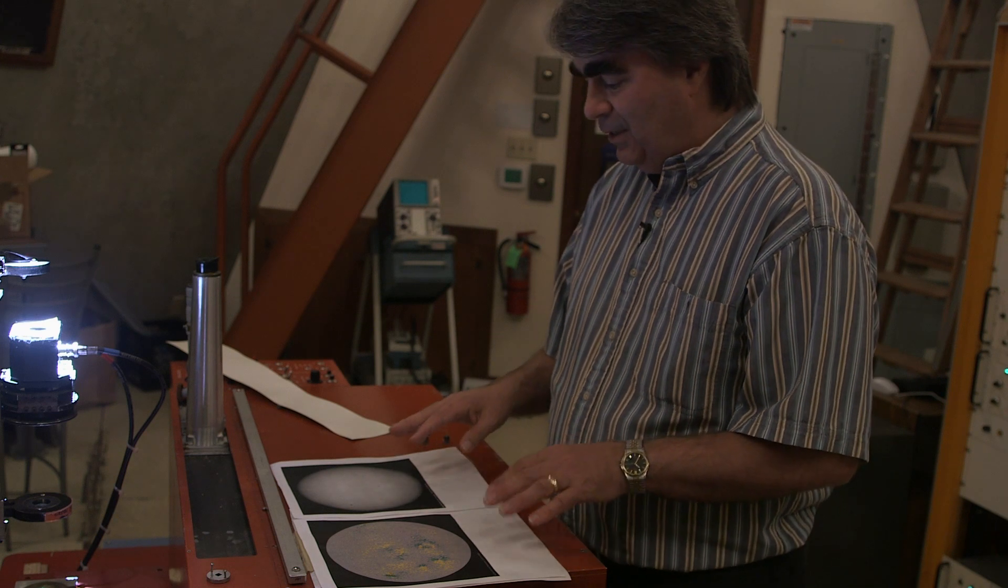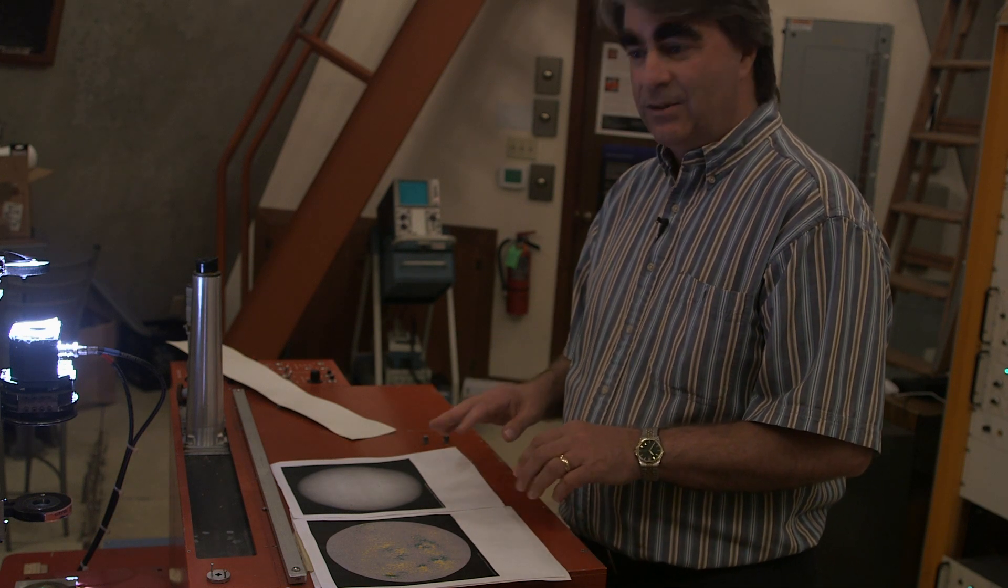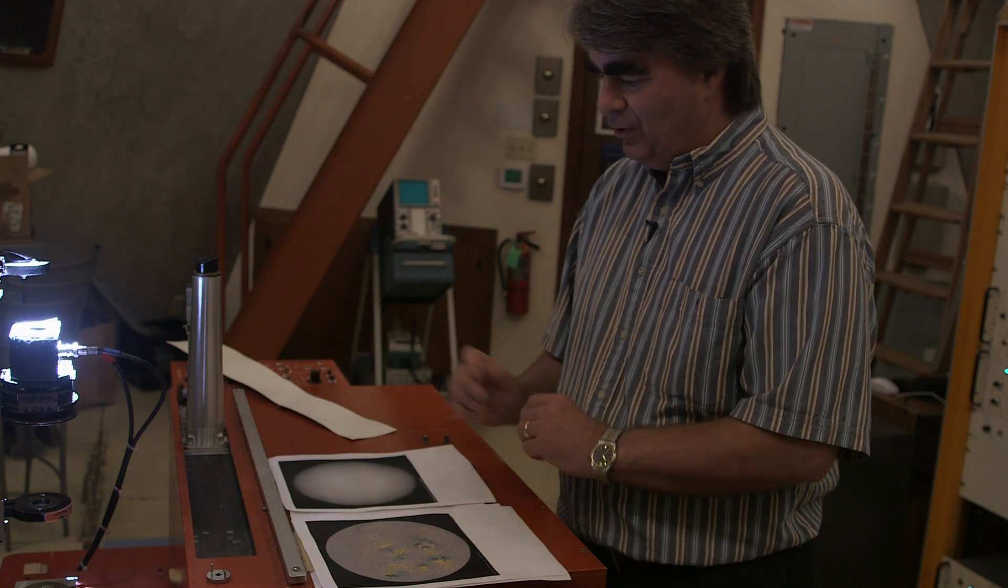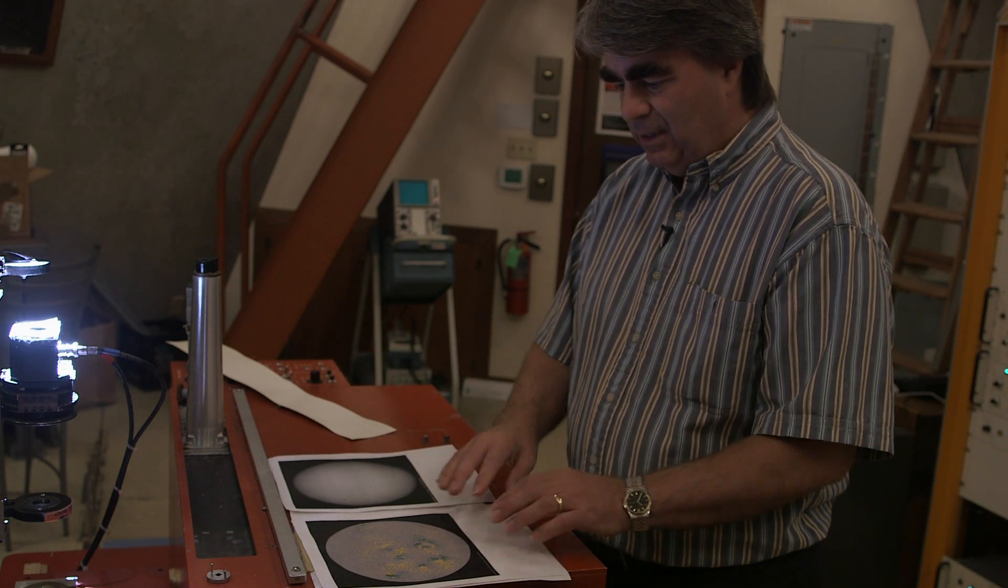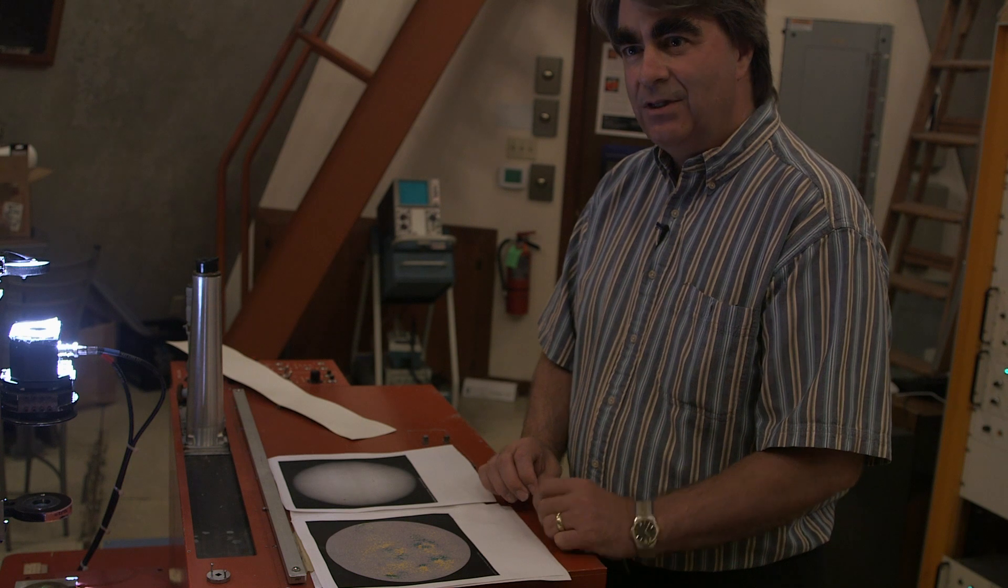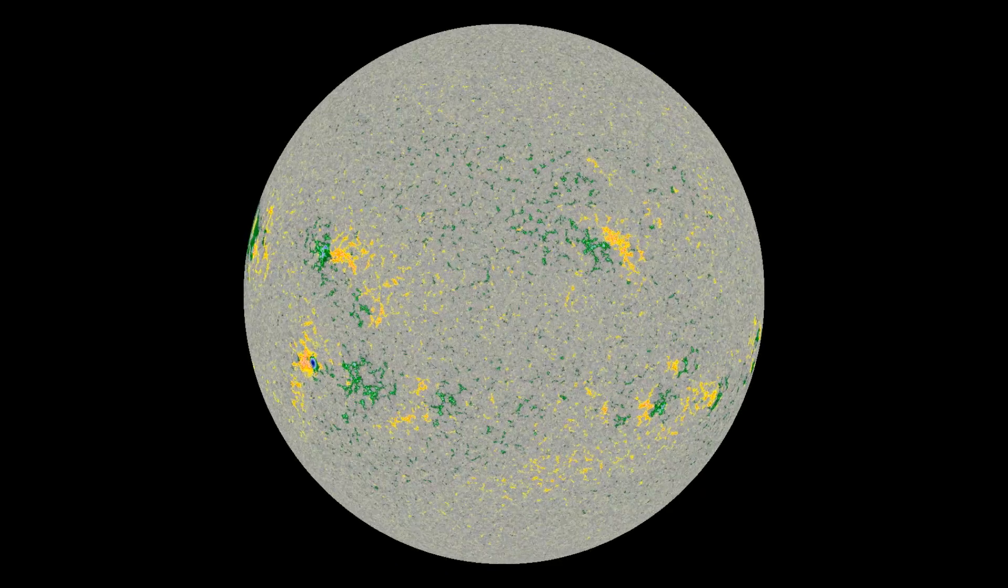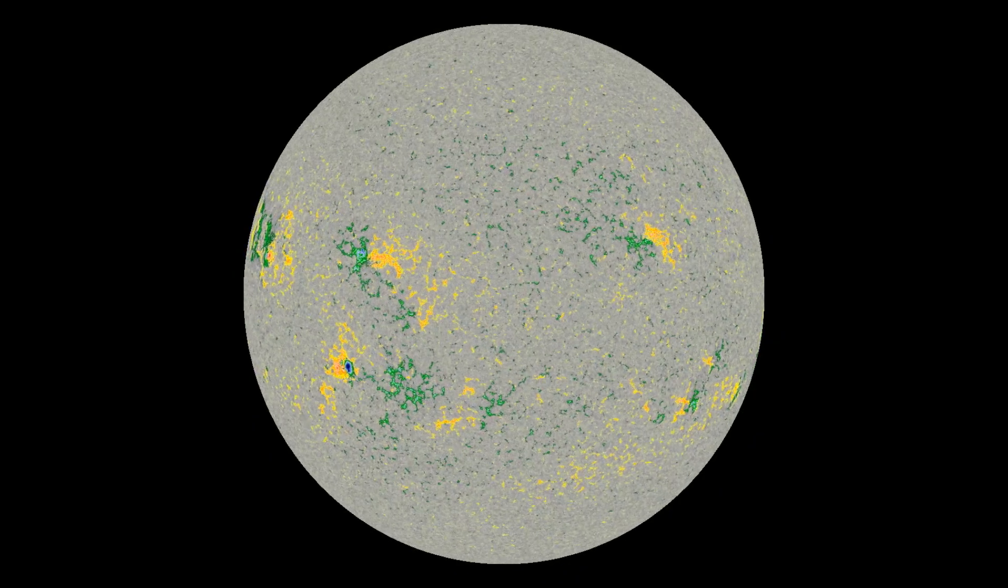So here we have two images of the sun that we've taken with our high-resolution space instrument. One of them is a white light picture like you might see if you were to look up at the sun. You see some sunspots. The other one is a magnetic field image, and it shows the direction of the magnetic field. The yellow is one polarity, positive, and the green is the other polarity, negative.